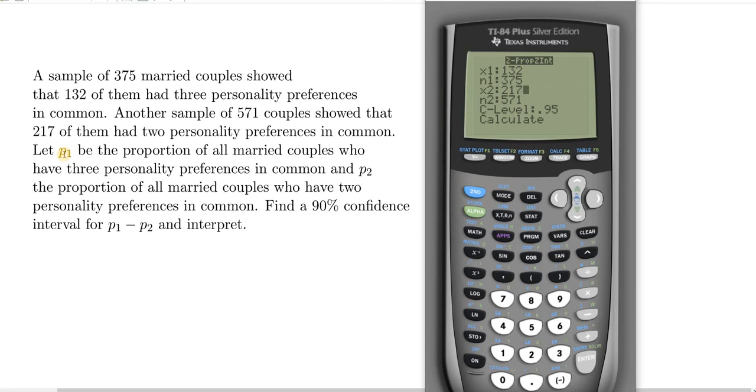It goes on to clarify that P1 is the proportion of all married couples with three personality preferences, and P2 is the proportion of all couples with two personality preferences. It's emphasizing that the first thing you read is the ones, and the second thing you read is the twos.